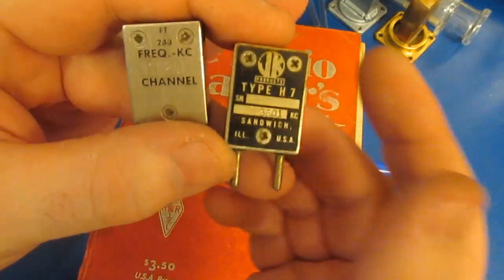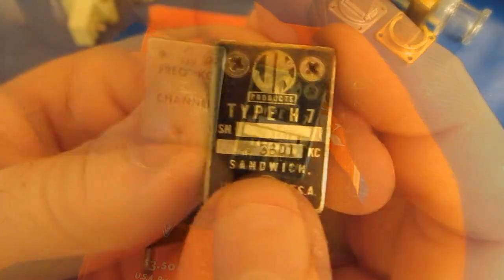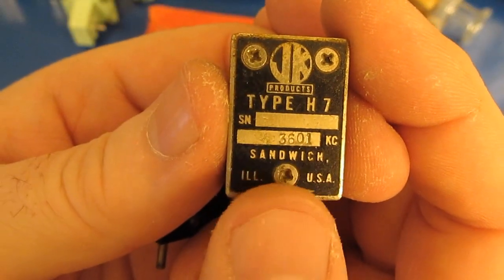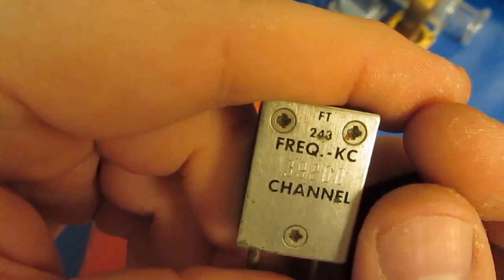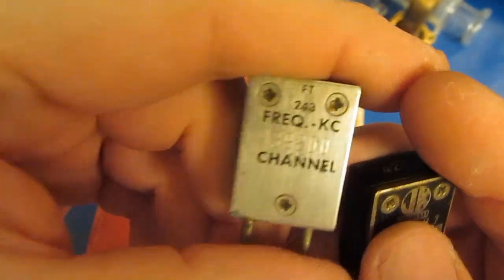I'm sure most of you are aware that crystals resonate at a particular frequency. This one is marked 3.601 kilocycles. The other one is marked 3.920 kilocycles.